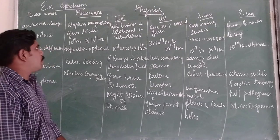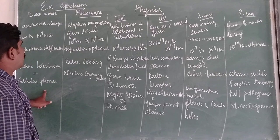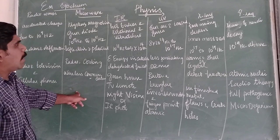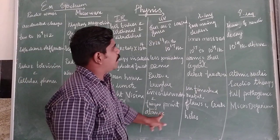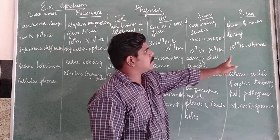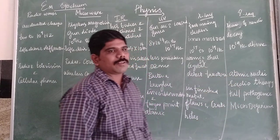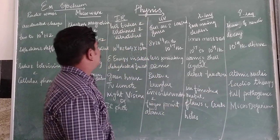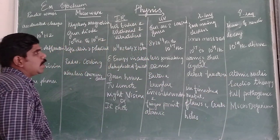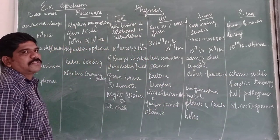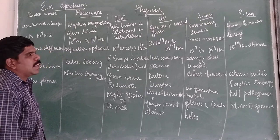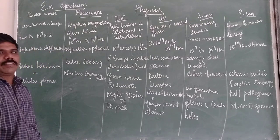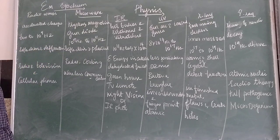The electromagnetic spectrum includes: radio waves, microwaves, infrared, ultraviolet, X-rays, and gamma rays. In between the infrared and ultraviolet, we have the visible rays.